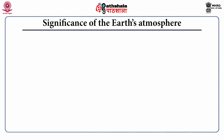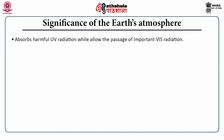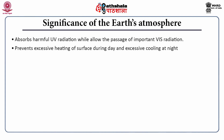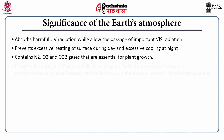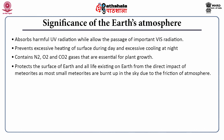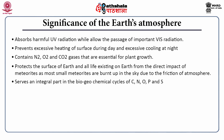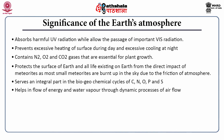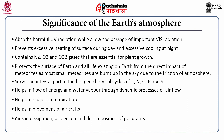Now let us discuss the significance of Earth's atmosphere. Earth's atmosphere absorbs harmful UV radiation and allows passage of important visible radiation, which is important for plant growth. It prevents excessive heating during the daytime and excessive cooling during nighttime. It contains nitrogen, oxygen and carbon dioxide — gases essential for plant growth. It protects the surface of Earth and all living creatures from the direct impact of meteorites, which get burnt up due to atmospheric friction. It serves as an integral part of the biogeochemical cycles of nutrient elements like carbon, nitrogen and oxygen. It helps in the flow of energy through the dynamic process of air flow, in radio communication, in the movement of aircraft, and in the dissipation and dispersion of pollutants.